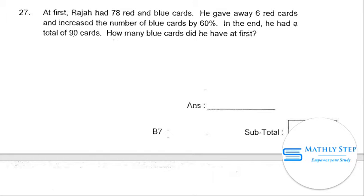27. At first, Raja had 78 red and blue cards. He gave away 6 red cards and increased the number of blue cards by 60%. In the end, he had a total of 90 cards. How many blue cards did he have at first?